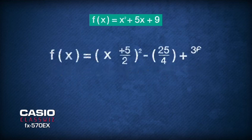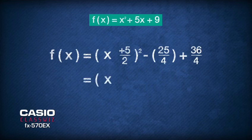Simplifying the function gives squared of x plus 5 over 2 plus 11 over 4.